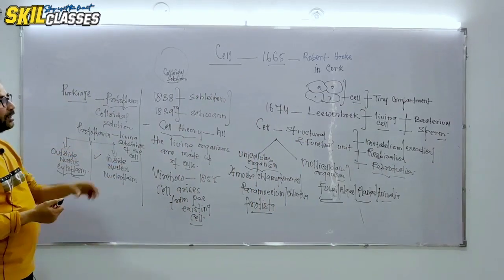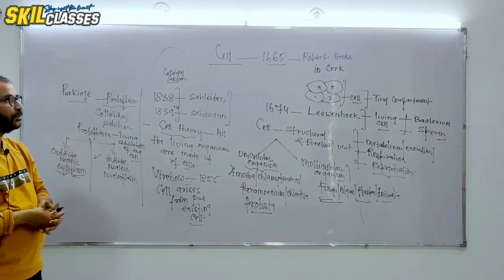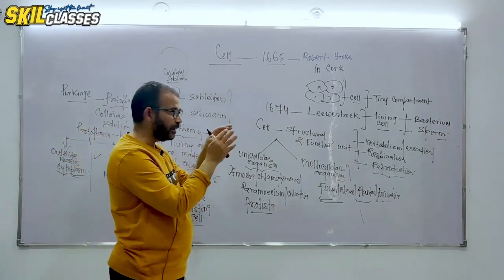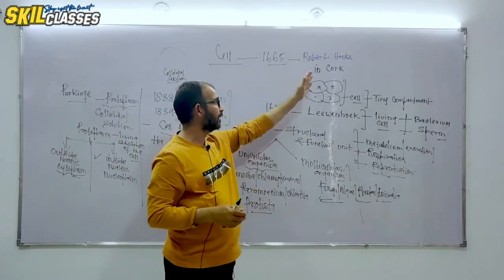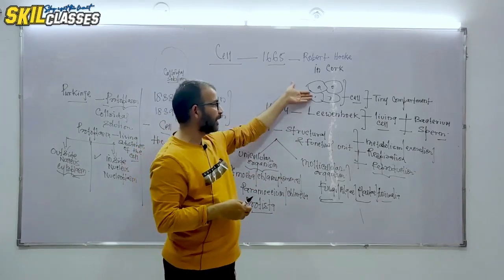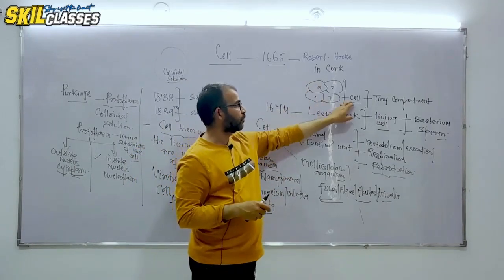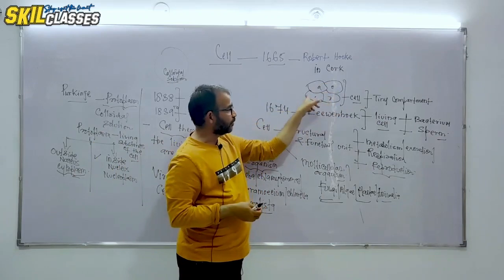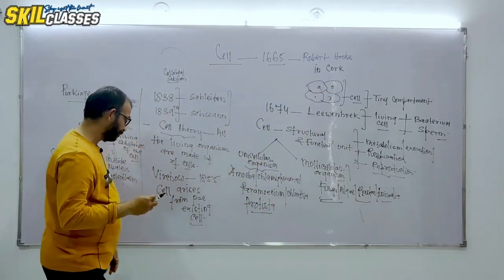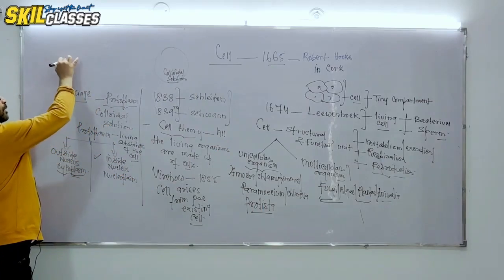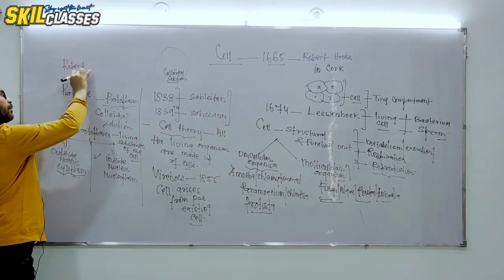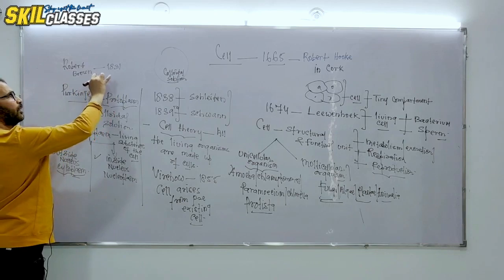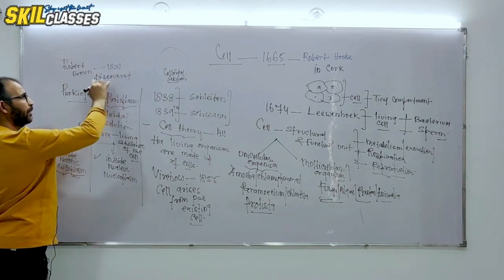As I told you, cell was discovered in 1665 by Robert Hooke. Inside a cork, and cork is basically the bark of plants. The outer layer of bark is called cork. When he viewed it under the microscope, he saw tiny compartments which he called cell. Inside the cell, this dotted structure shown is called nucleus. Later, when Robert Brown in 1831 discovered nucleus.